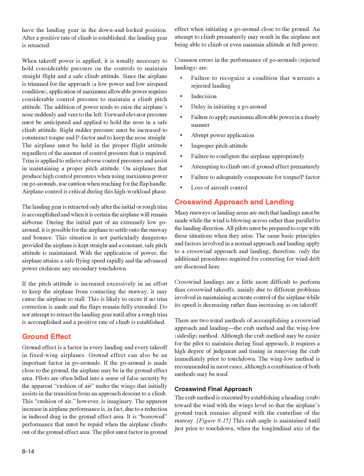Ground Effect. Ground effect is a factor in every landing and every takeoff in fixed-wing airplanes and can also be an important factor in go-arounds. If the go-around is made close to the ground, the airplane may be in the ground effect area. Pilots are often lulled into a sense of false security by the apparent cushion of air under the wings that initially assists in the transition from approach descent to a climb. This cushion of air is imaginary—the apparent increase in airplane performance is due to a reduction in induced drag in the ground effect area. It is borrowed performance that must be repaid when the airplane climbs out of the ground effect area.